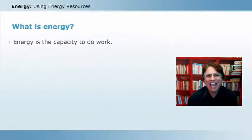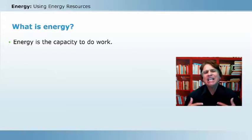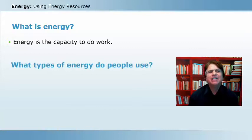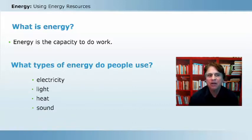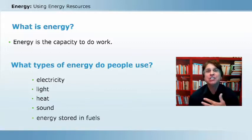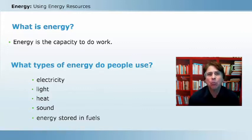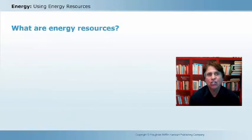So what is energy? Energy is the capacity to do work, to change something. If we look at the types of energy that people use: most of us use electricity all of the time. Light — we use light to see. Heat keeps us warm. Sound energy is impacting our lives. And there's also energy stored in the chemical bonds of fuels. So there are different types of energy that we certainly use.